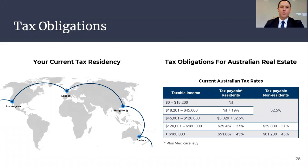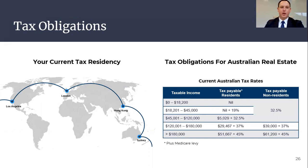This includes tax on rental income from Australian property, and also the capital gain at the time of sale. The tax rate applied to Australian taxable income or capital gains is determined by whether you are a resident for tax purposes in Australia for that financial year, or a non-resident for tax purposes and a tax resident of a country outside of Australia.